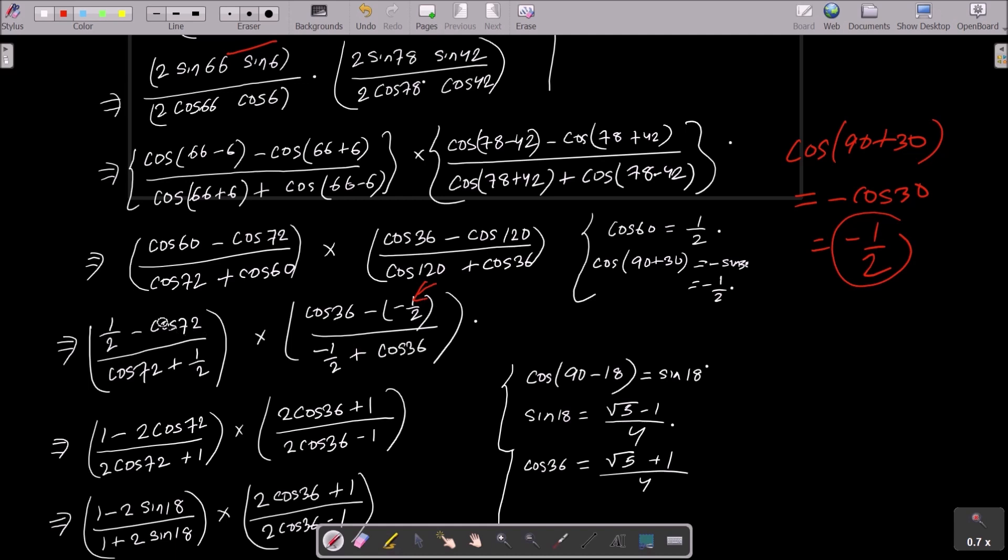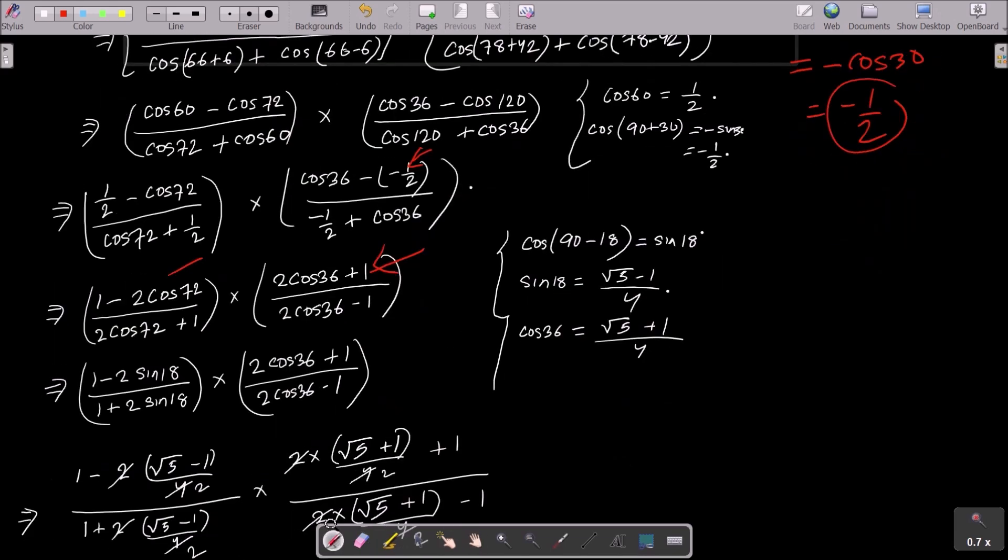1/2·cos(...) minus cos(72°)·cos(36°). Take the LCM, then you can get these terms. Here minus and minus 1, and minus 1/2 in this place, minus 1/2 plus cos(36°). After doing the calculation, then you can get these terms.